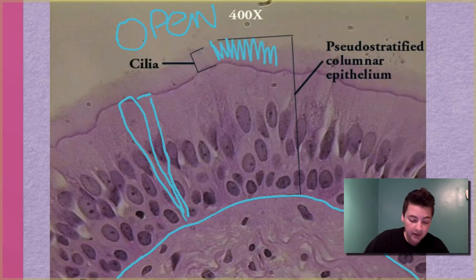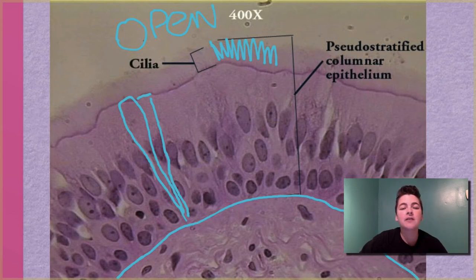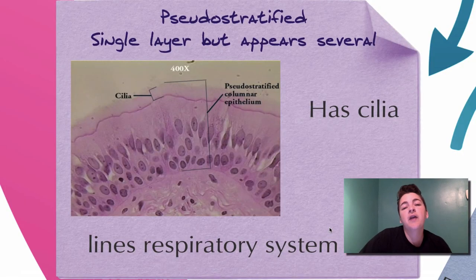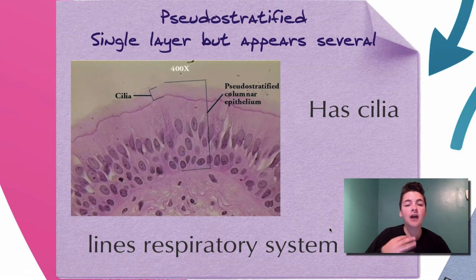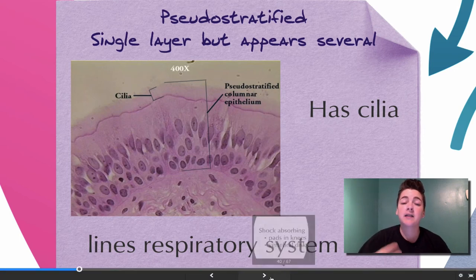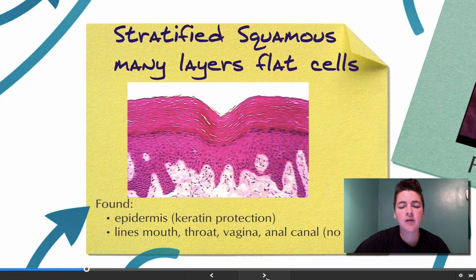Pseudostratified tends to have cilia — the little hairs on the outside of the cell. Pseudostratified is found within the respiratory system. The cilia beat back and forth to help collect debris and bacteria before it gets down to the lungs, and they also push mucus up from the trachea, allowing you to swallow the mucus that has collected gross material before it enters your lungs.